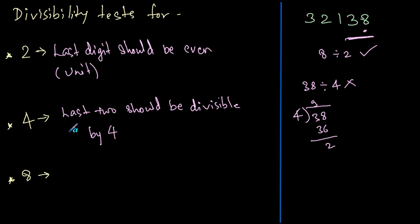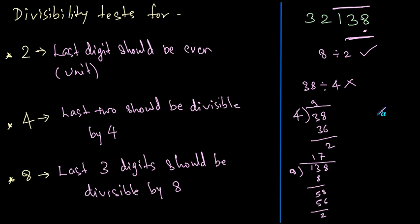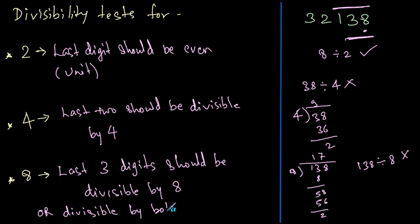Moving on to 8, the condition states that the last 3 digits should be divisible by 8. The last three digits are 138. Dividing: 8 ones are 8, remainder 5, bring down to get 56, 8 sevens are 56, remainder 2. So 138 is not divisible by 8. This example is only divisible by 2. Also note: if a number is divisible by 8, you can check divisibility by 4 and 2 as well.